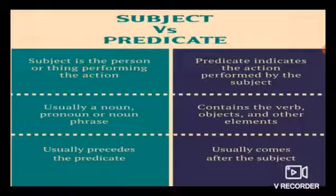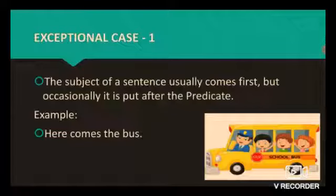A predicate contains the verb, objects, and other elements. A subject usually precedes the predicate, and a predicate usually comes after the subject.